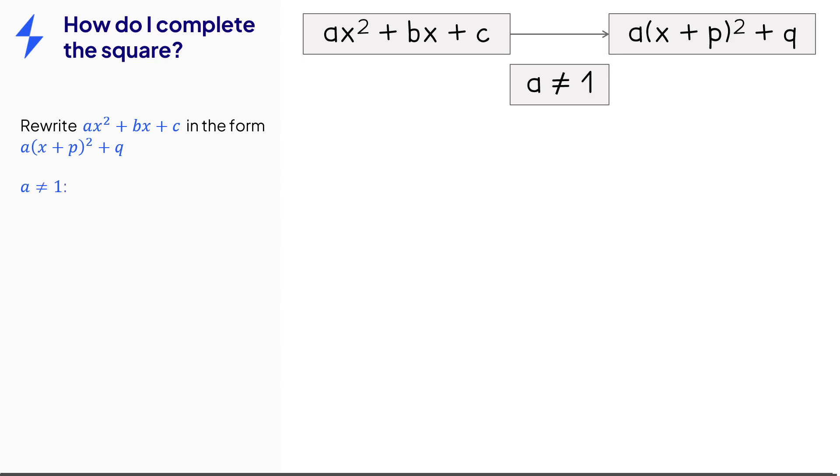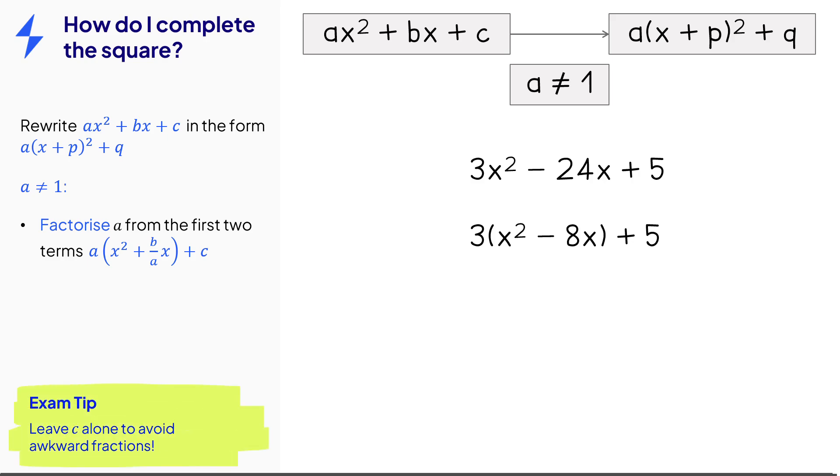Now let's look at what we do in the case when a is not equal to 1. We first of all factorize out a from the two terms that have an x in them. So in this example we would factorize out 3 from the first two terms. The reason why we don't factorize out 3 from all the terms is because it avoids awkward fractions.